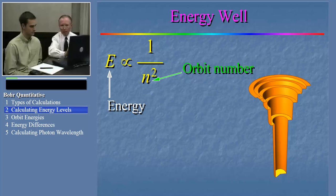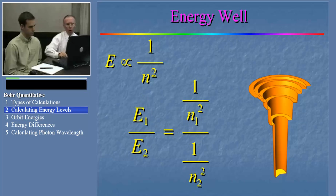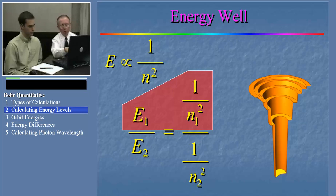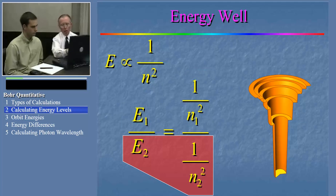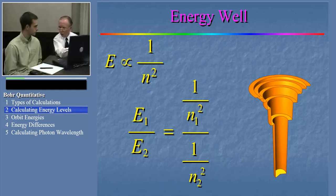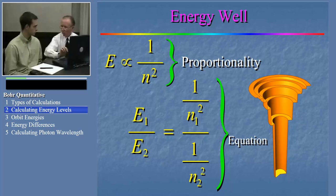This is a really handy relationship, because if that is true, then the following has to be true. On the top of this new equation we see the same kind of relationship as in the proportionality, but for n1 and E1. And on the bottom we see this relationship for n2 and E2. Because the proportionality is true, the ratio of the proportionalities is an equation that we can then manipulate.